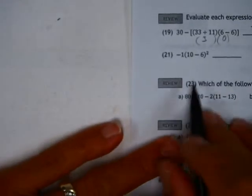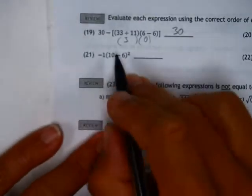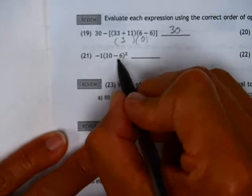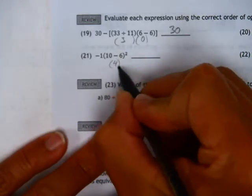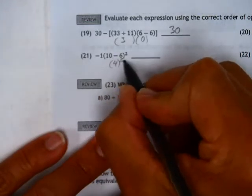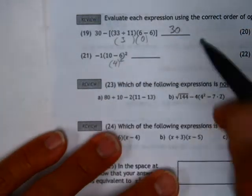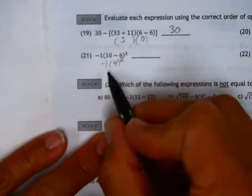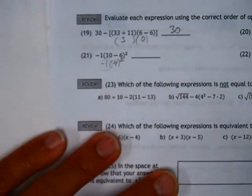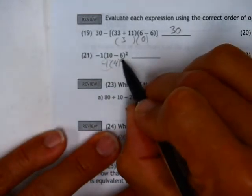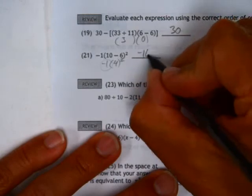We go over here, you've got your 10 minus 6 is equal to 4. You've got to do your parentheses first, and then your exponent. So the negative 1 out in front just means your answer is going to be negative whatever you get. 4 squared is 16, you've got negative 16.